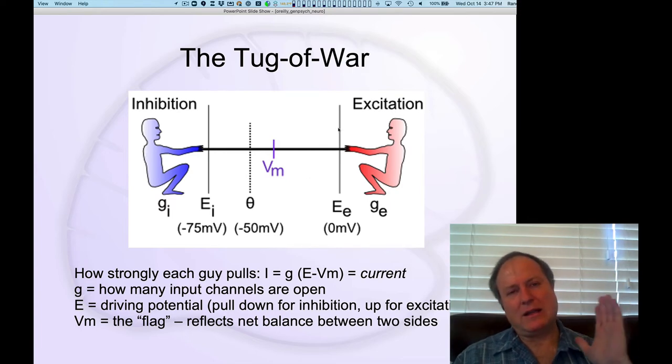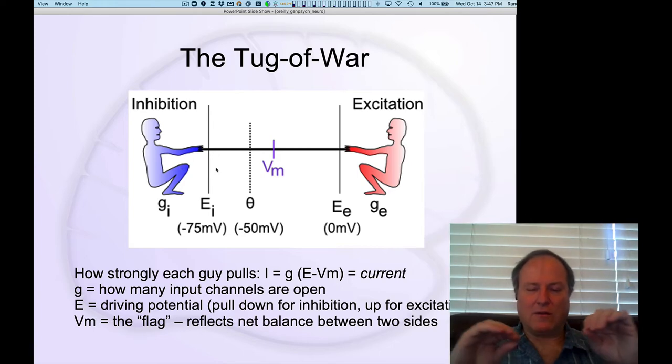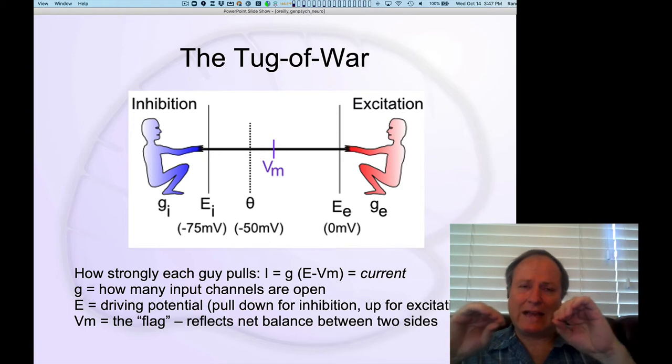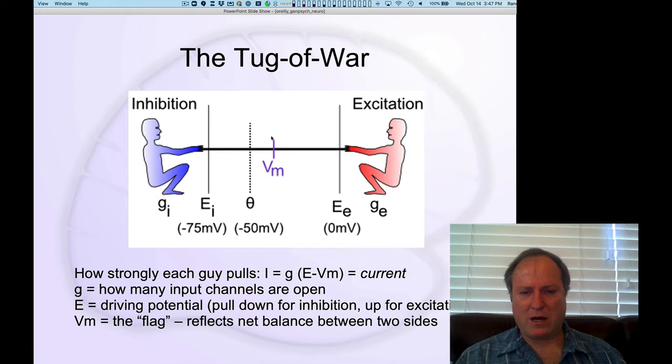And then the other side is pulling it up in the positive direction, and that's known as excitation. And so these little subscripts here, I mean inhibition, and the E means excitation. And the battle, the pitch here, the turf over which they're battling is just this electrical potential. It's the difference in electrical charge inside and outside of the cell. And it's across that membrane, which is why we call it the membrane potential,